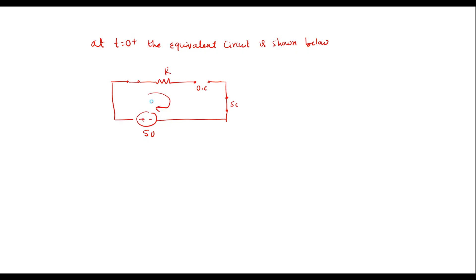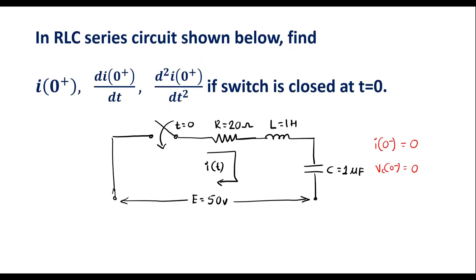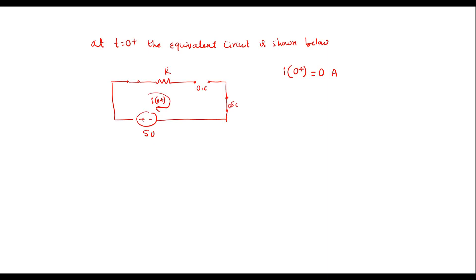So now the current in the circuit will be i(0+). Here we can see that as the circuit is open due to the inductor, the current in the circuit will be 0. That is i(0+) is equal to 0 amp. From this we can also directly write i(0-) equals i(0+) equals 0. Similarly, the capacitor acts like a short circuit, which means Vc(0+) is equal to 0 volts.